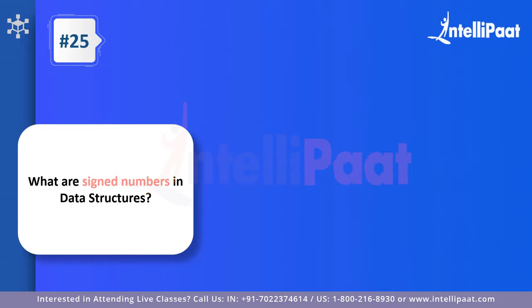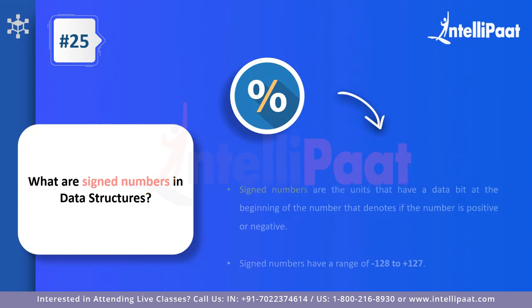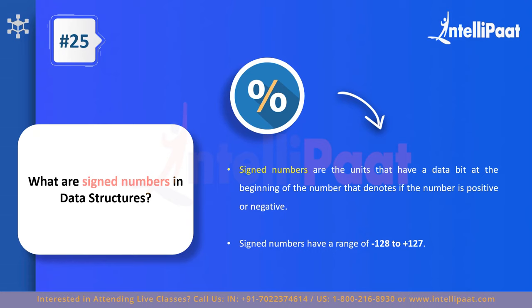Question twenty-five: what are signed numbers in data structures? Signed numbers have a sign bit at the beginning that indicates whether the number is positive or negative. Since we're working in binary, if the sign bit is one, the number is negative. If the sign bit is zero, the number is positive. This sign bit denotes the presence of either a positive or negative sign for the associated number.